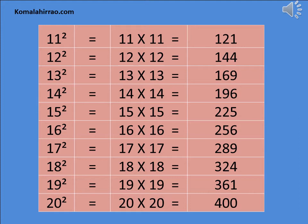14 square is equal to 14 multiply by 14 is equal to 196. 15 square is equal to 15 multiply by 15 is equal to 225. 16 square is equal to 16 multiply by 16 is equal to 256. 17 square is equal to 17 multiply by 17 is equal to 289.